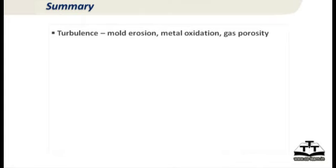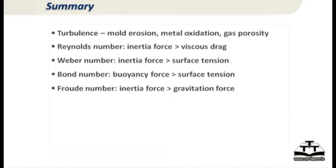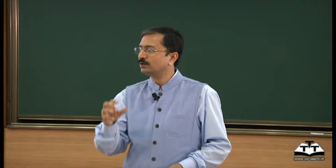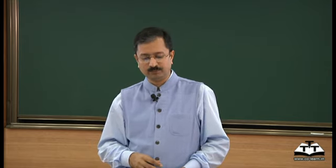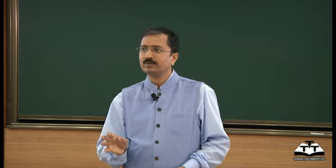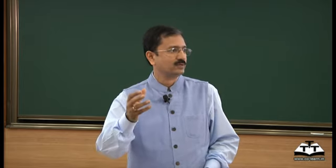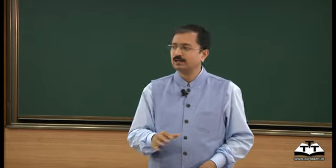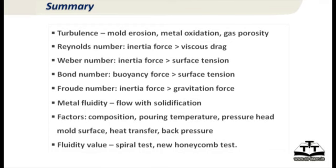To summarize: we talked about turbulence first and why turbulence is bad. We looked at the Reynolds number and various other numbers — Weber, Bond, Froude — to characterize turbulence in different ways, but Reynolds number is the most important. Then we looked at fluidity, which occurs because metal is flowing and solidifying at the same time. We covered different factors affecting fluidity and fluidity control, and we discussed the honeycomb test as a more realistic measurement of fluidity.